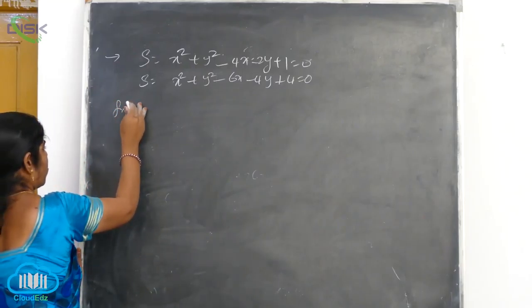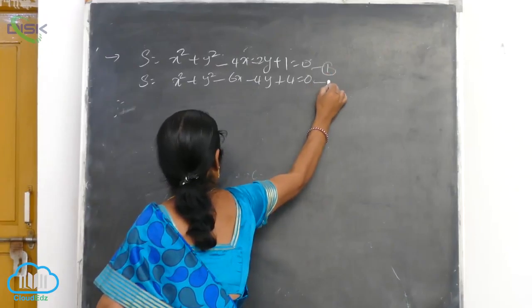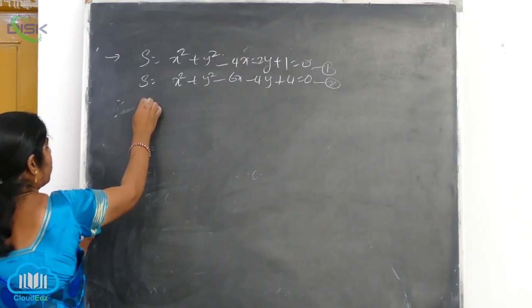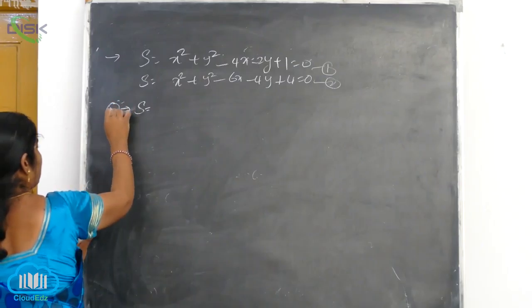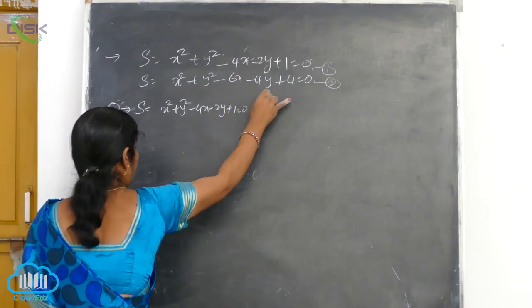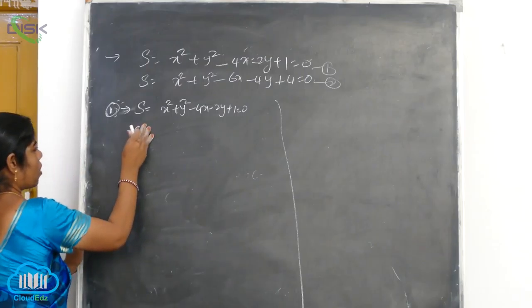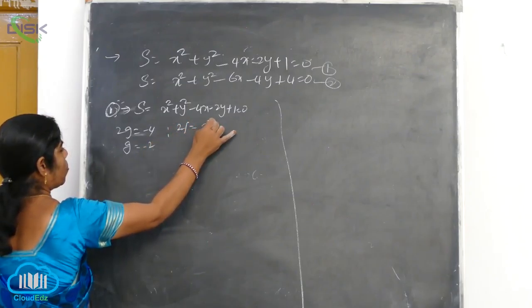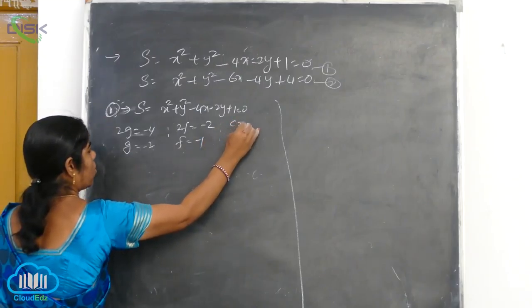From the first circle: x squared plus y squared minus 4x minus 2y plus 1 is equal to 0. Then, 2g is equal to minus 4, so g is minus 2. And 2f is equal to minus 2, so f is equal to minus 1. Then c is equal to 1.